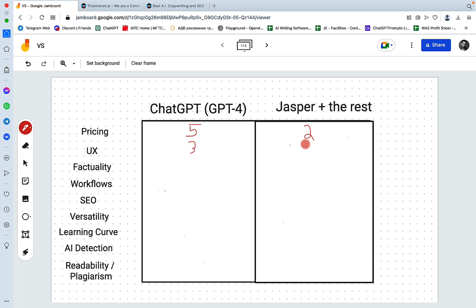Whereas Jasper UX is 5. They have a lot of templates that you can follow. There is a help menu, there is a whole video library of tutorials. So Jasper wins here.